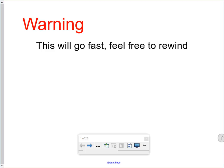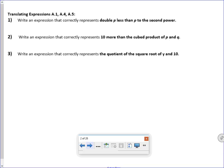So at any time, if you get a problem you don't understand, feel free to rewind. All right, so we'll do these first ones. Write an expression that correctly represents double p less than p to the second power, and the key word in all of these problems is expression. That means no equal sign.